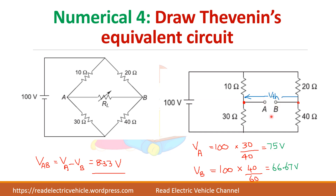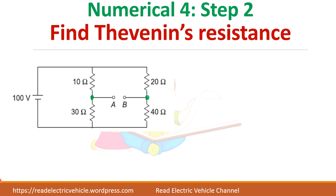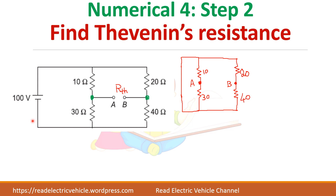Now let us find the Thevenin resistance. To find the Thevenin resistance, first you have to short circuit the voltage source. Then take 10 and 30 ohm resistors — let us short circuit this 100 volt source — and 20 and 40 ohms are here. Mark A and B points.